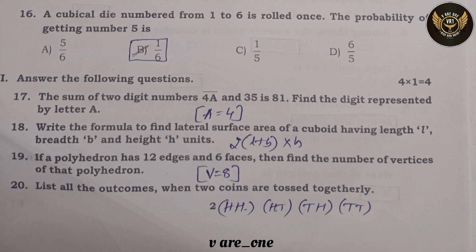Twentieth question: list all the outcomes when two coins are tossed together. The outcomes are: Head-Head, Head-Tail, Tail-Head, and Tail-Tail.